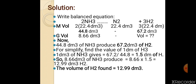ایکوئیشن میں دیکھا کہ 44.8 dm³ امونیا سے 67.2 dm³ ہائیڈروجن بن رہی ہے۔ امونیا کے 2 مولز کی ڈیسوسی ایشن سے 3 مولز ہائیڈروجن بنتے ہیں۔ دیا گیا والیم 8.6 dm³ امونیا کا ہے اور ہائیڈروجن کا والیم کیلکولیٹ کرنا ہے۔ تو: 44.8 dm³ امونیا → 67.2 dm³ ہائیڈروجن۔